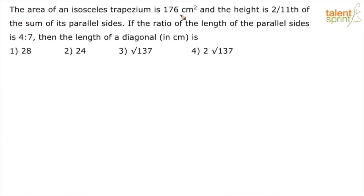The area of an isosceles trapezium is 176 centimeter squared and the height is 2/11th of the sum of its parallel sides. If the ratio of the length of the parallel sides is 4 is to 7, then the length of the diagonal in centimeter is dash.